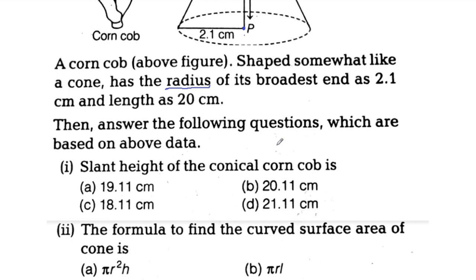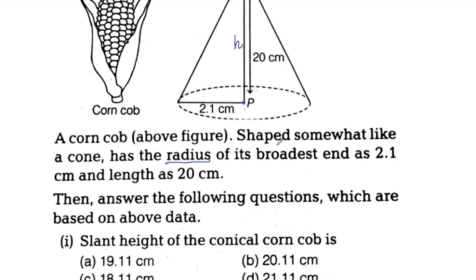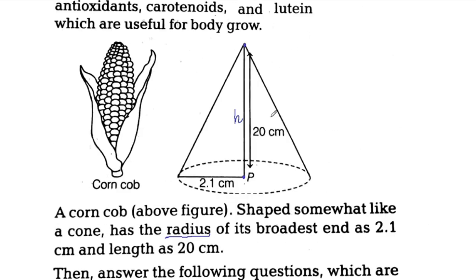First question: find the slant height of the cone. We can see the slant height of the cone. The equation is L, and this is the shape of a right triangle.